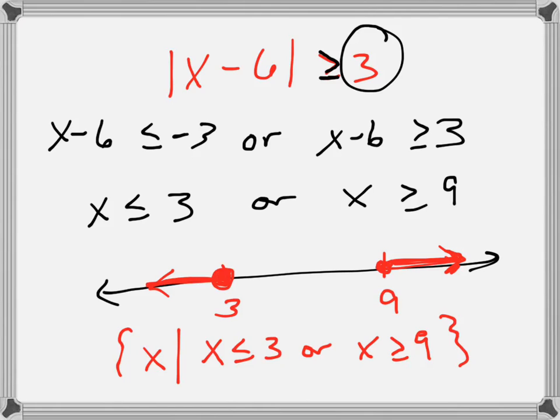To write it in interval notation, it would be from negative infinity to 3, bracket, union, from 9 to infinity. That's how you do that problem.